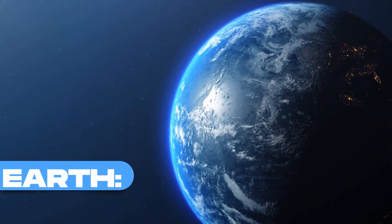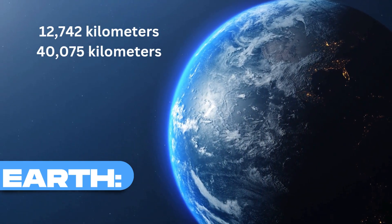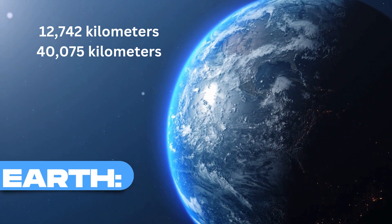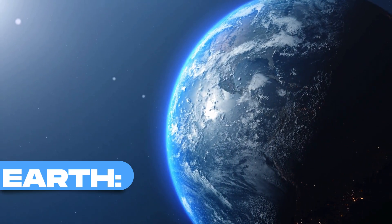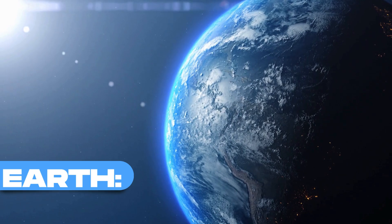Our home planet, Earth, has a diameter of approximately 12,742 kilometers and a circumference of about 40,075 kilometers. It is one of the smaller objects in the universe but still substantial compared to our everyday experiences.